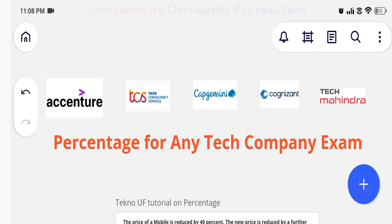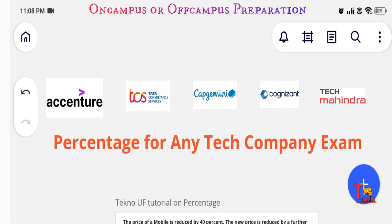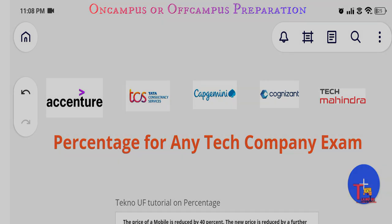Hello, family members! Today is the third class of cognitive assessment preparation for companies like Accenture, TCS, NQT, Cognizant, Wipro, etc. Today we are going to solve five most repeatedly asked questions from percentage and discuss the theory as well. If you have not been watching the playlist regarding preparation, kindly watch — the link is given in the description box. If you are preparing for any off-campus or on-campus drive, please subscribe the channel so that you can be updated. Let's move to the questions.